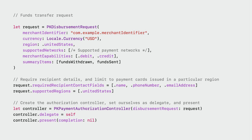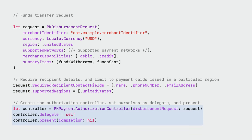To construct a PKDisbursementRequest, you need to specify certain details: the merchant identifier you set when registering for Apple Pay, the currency of the transaction, the region of your business, as well as the networks and capabilities defined earlier. You also provide the summary items you just created. If you require the contact details of the transfer recipient, you can request those here as well. You can also limit which regions the recipient's payment card has been issued in. Once the request has been built, we initialize an instance of PKPaymentAuthorizationController with our DisbursementRequest, set ourselves as a delegate, and then present.